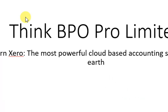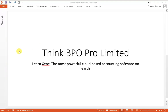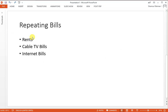What we are going to learn today is the repeating bills — not repeating invoice, repeating bills. Repeating bills means we have to pay the rents, the cable TV bills, the internet bills. Those are the repeating bills — the same amount from the supplier or vendor every month. So instead of doing this bookkeeping manually, we are going to automate this bookkeeping through Xero, the most powerful accounting software on earth.